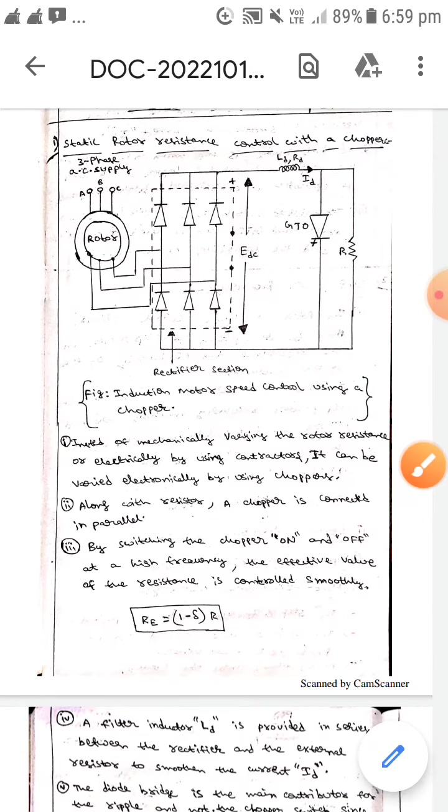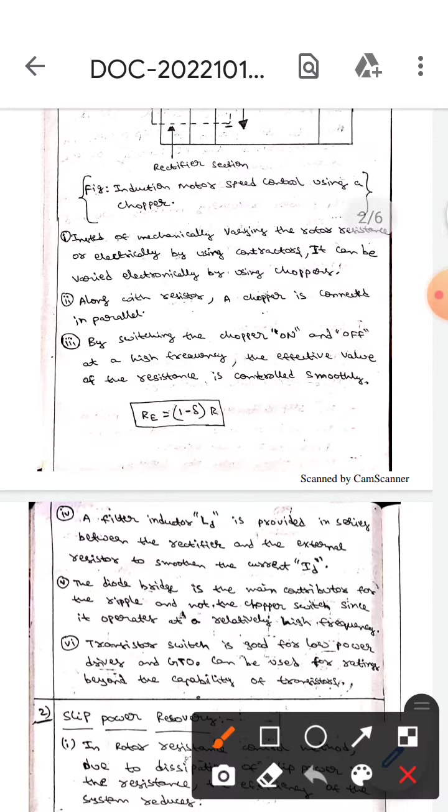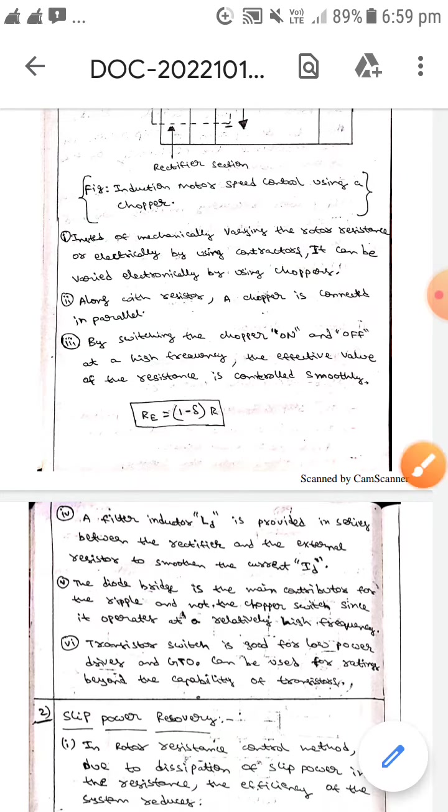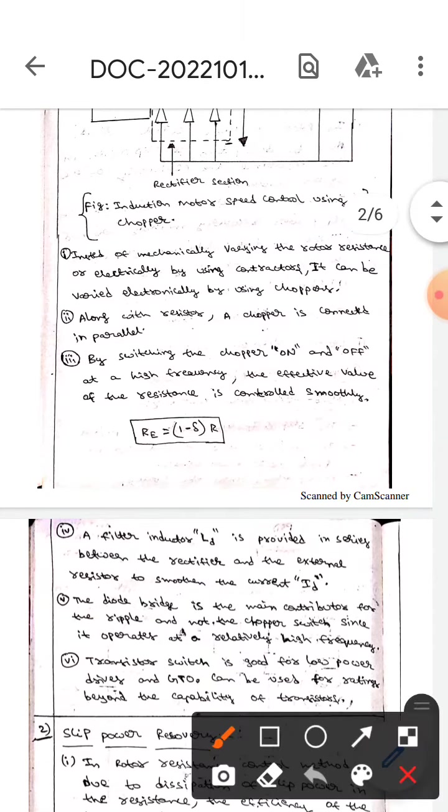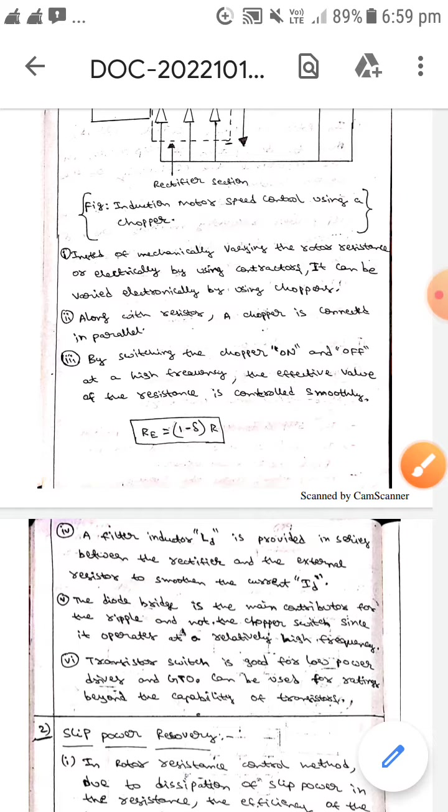The diode bridge is the main contributor for the ripple and not the chopper switch, since it operates at a relatively high frequency. Also, the transistor switch is good for only low power drives, whereas GTO can be used for ratings beyond the capability of transistors.